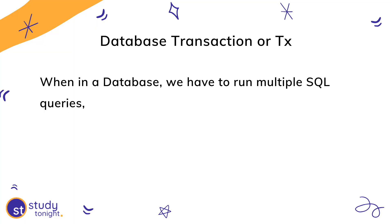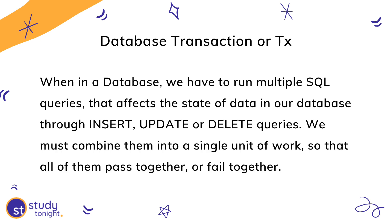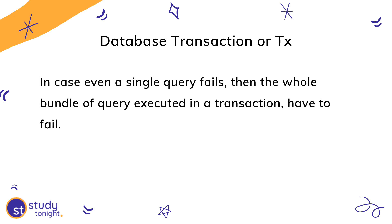Enabling this behavior in databases is done using transactions, also represented by the symbol TX. When in a database we have to run multiple SQL queries that affect the state of data through insert, update, and delete queries, we must combine them into a single unit of work so that all of them pass together or fail together. If even a single query fails, then the whole bundle of queries executed in a transaction have to fail — and that is done using transactions in a database.